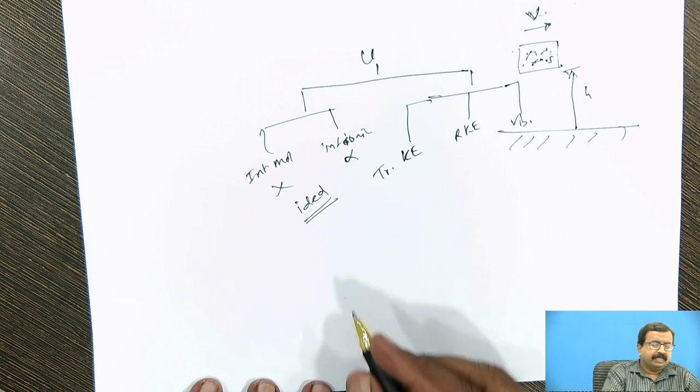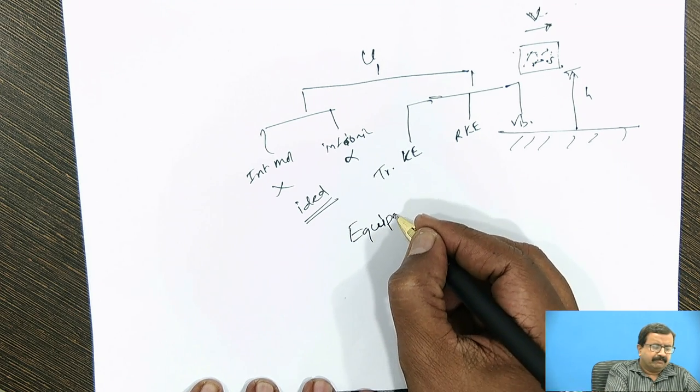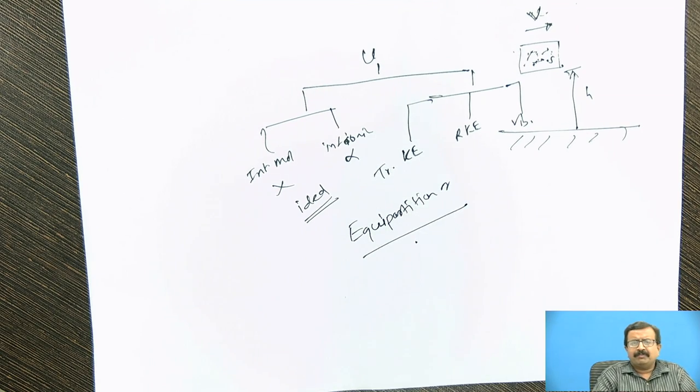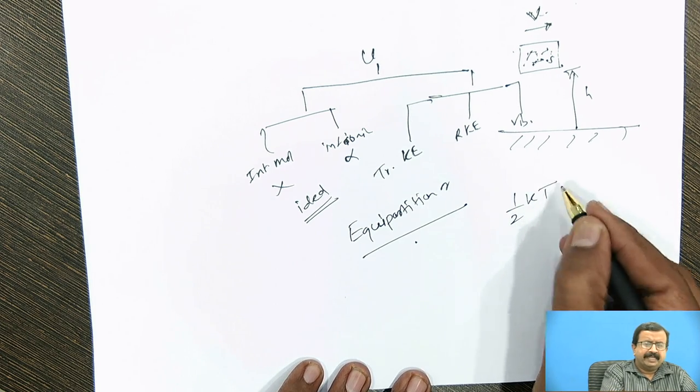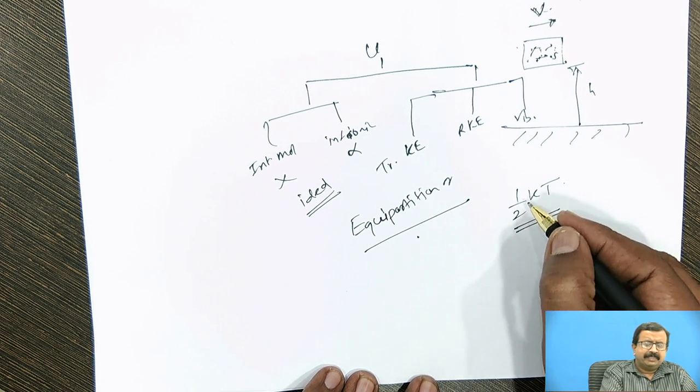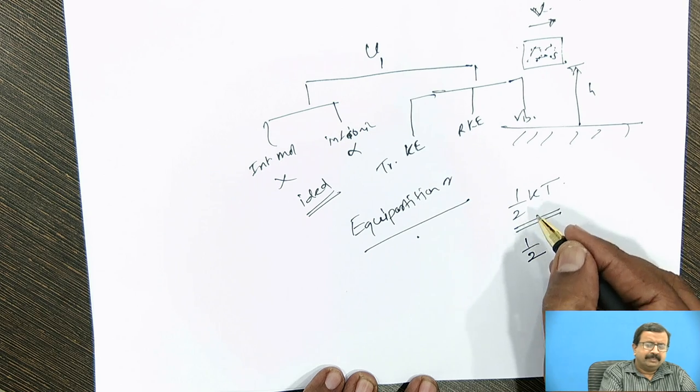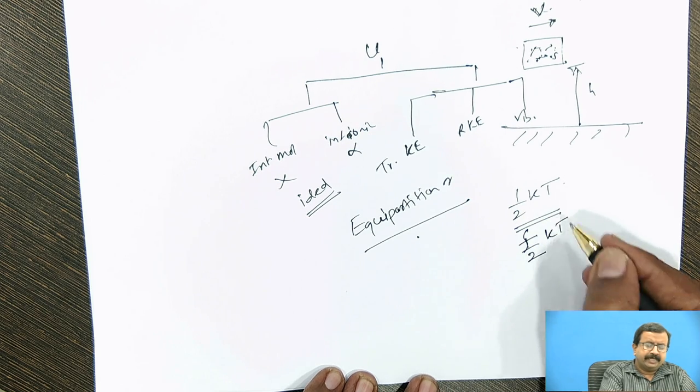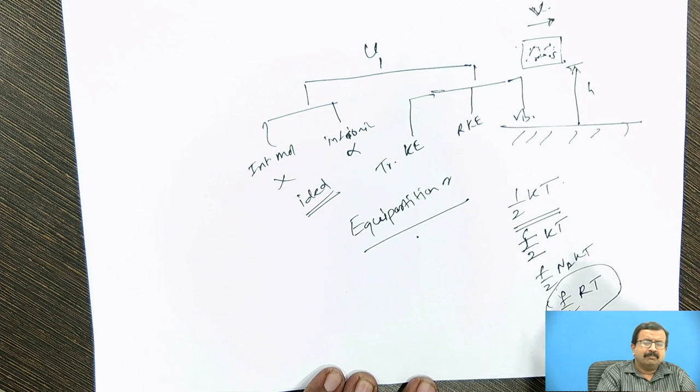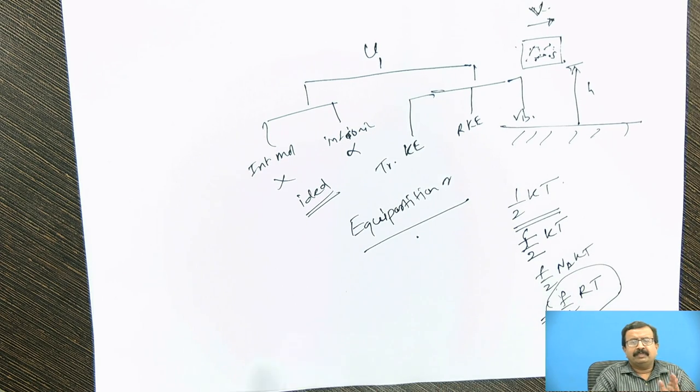And here comes the main theorem of thermodynamics, which is known as principle of equipartition of energy. Now this equipartition of energy says that the energy per molecule is given by one half kT. The proof of this will be seen in detail afterwards. And if it is per degree of freedom, it is per degree of freedom. If there are f degrees of freedom, it is f by 2 kT. If there are avogadro number of molecules, it is Na into kT, and f by 2 becomes RT. So this is our equation for energy in each degree of freedom.